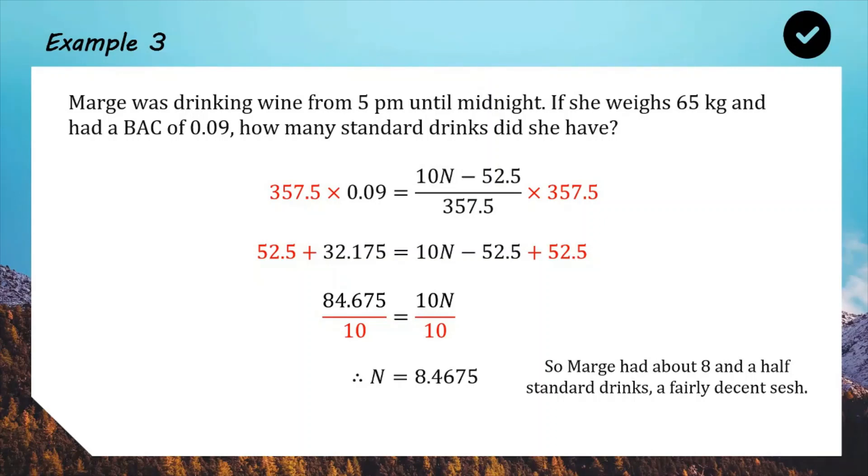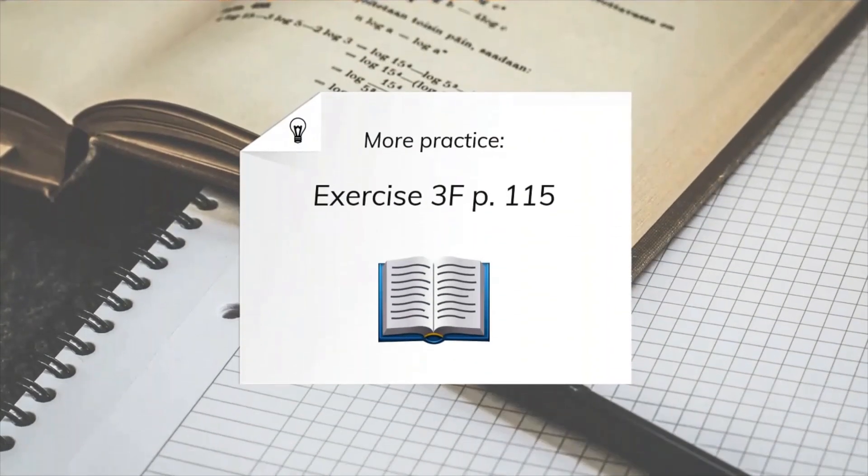Think about your life decisions, Marge. And that will probably do it for today. So that is three different types of examples using the BAC formula, as well as using the time to wait until zero formula. So you can have a go at some more by yourself in exercise 3F. And I'll put some more work up soon. Thanks for watching. Good luck. Farewell. Ciao. Bye.